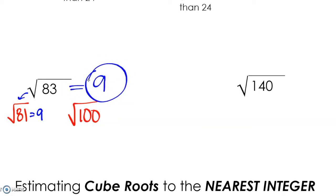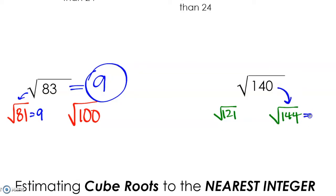The square root of 140. So the perfect square that is closest to 140 and less than 140 is 121. And the perfect square that is closest to 140 but greater is 144. Since 140 is closer to 144 and the square root of 144 is 12, we can say that the nearest integer value of the square root of 140 would be 12.